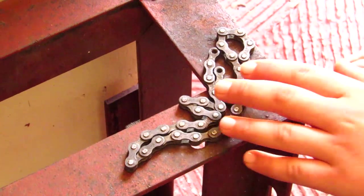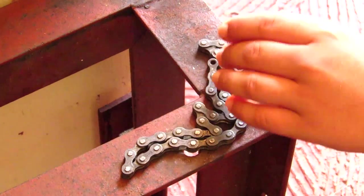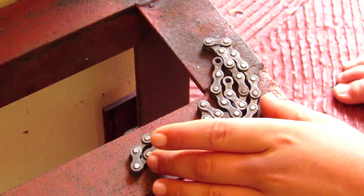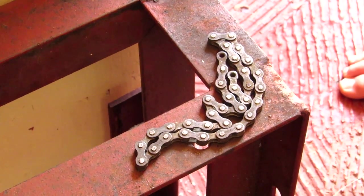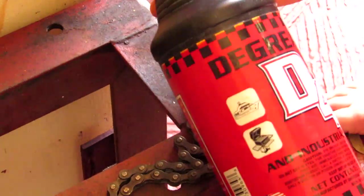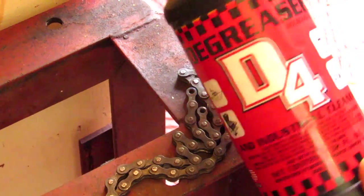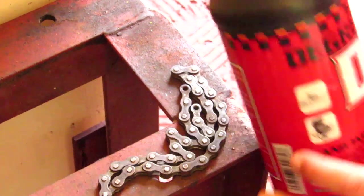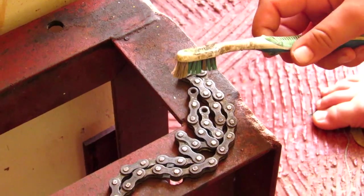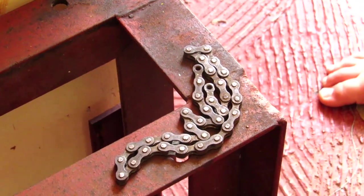The next step to make this fidget spinner, you're gonna take your old ugly greasy chain. If it's clean you just skip this step, but if it's dirty like mine you're gonna need some degreaser. The degreaser I'm using is D4, you just buy it in your hardware store. You're gonna need an old toothbrush or just a brush, and you're gonna spray a bit and then brush.